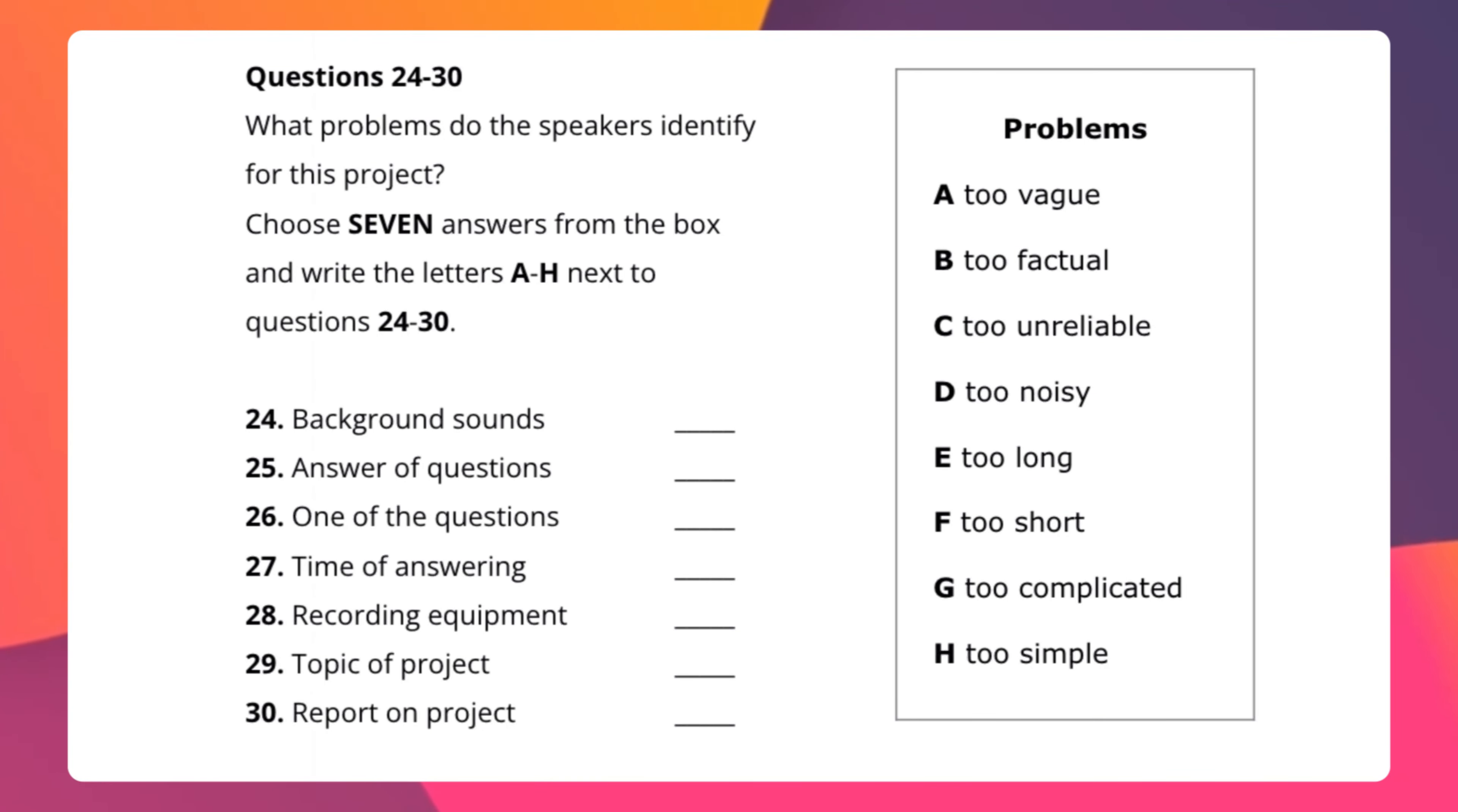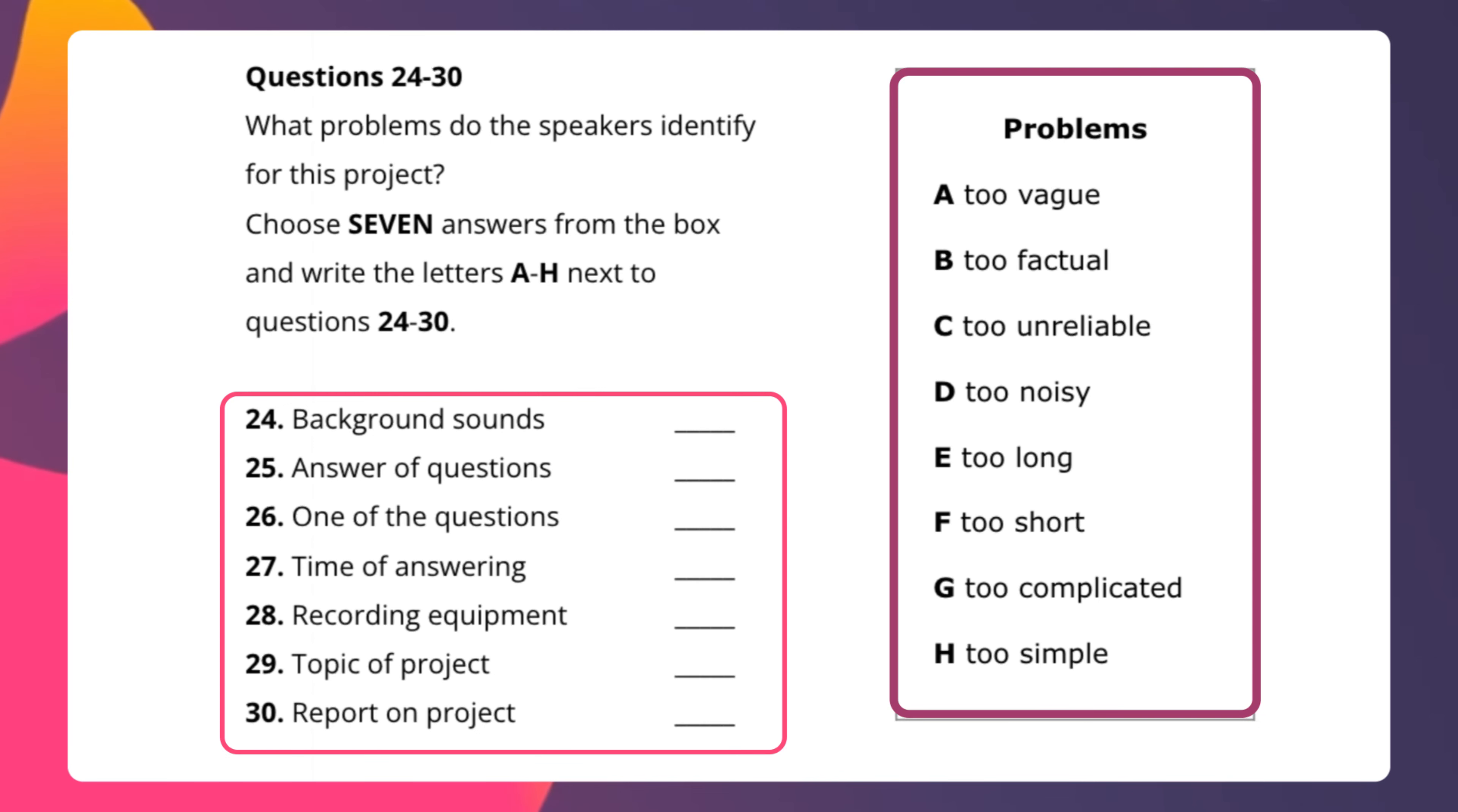So if you look into the question on the left hand side we have a numbered list of items that is from question 24 to 30. We have to select seven answers from the given options. So in the given options, that is a set of options, actually contains eight answers.